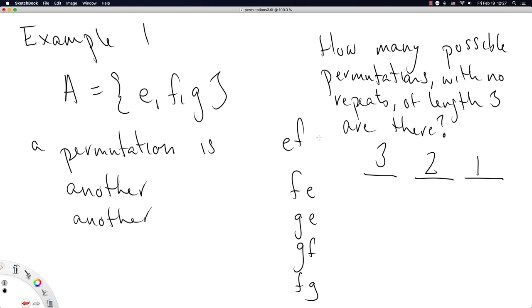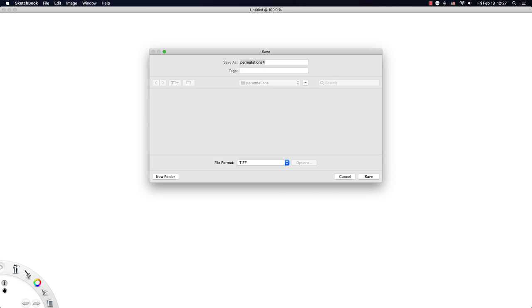There are six permutations possible from three elements taken three at a time. We're going to use this to define something new for us: the definition of factorial.